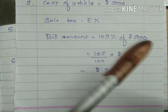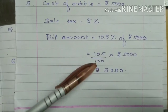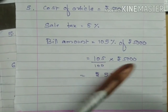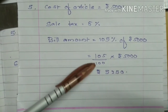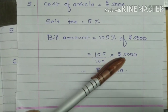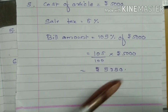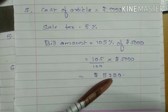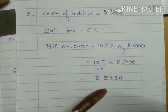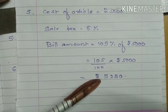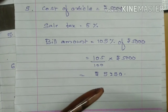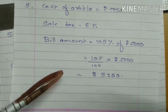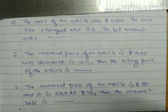So it is 105% of Rs. 5,000. You can simplify that — the two zeros cancel, and 105 into 50 gives Rs. 5,250. So with the tax, we have to pay Rs. 5,250 for that article.